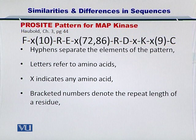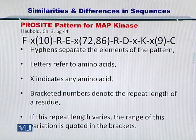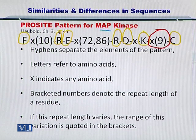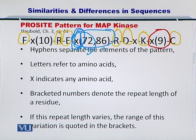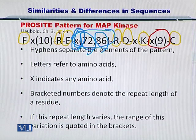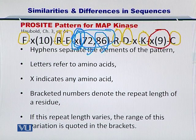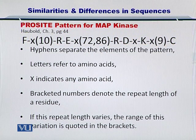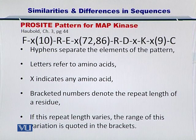However, there may be a situation where the repeat length is variable. In that case, the variation is represented as a range, meaning any amino acid X may occur 72 to 86 times. That is how you represent the ProSite pattern for MAP kinase protein. MAP kinase is a very important protein — it phosphorylates many proteins and is responsible for mitosis and apoptosis in cellular behavior. Using such ProSite patterns, you can represent sequences of interest.